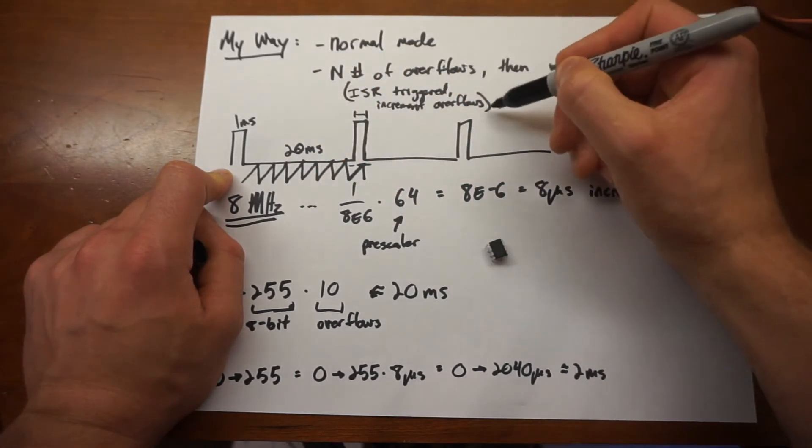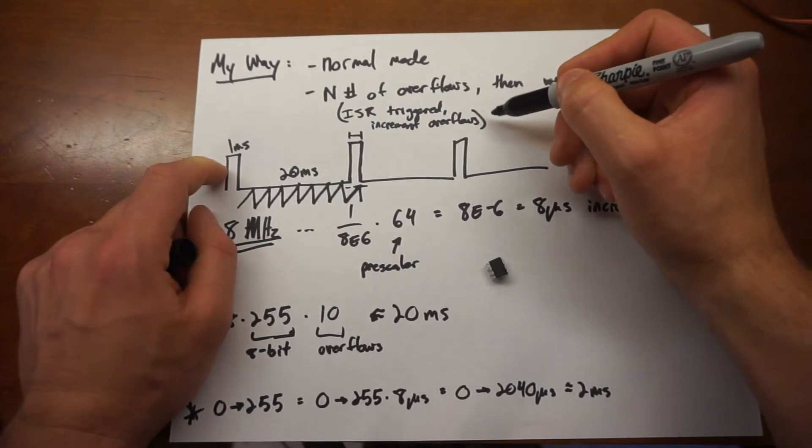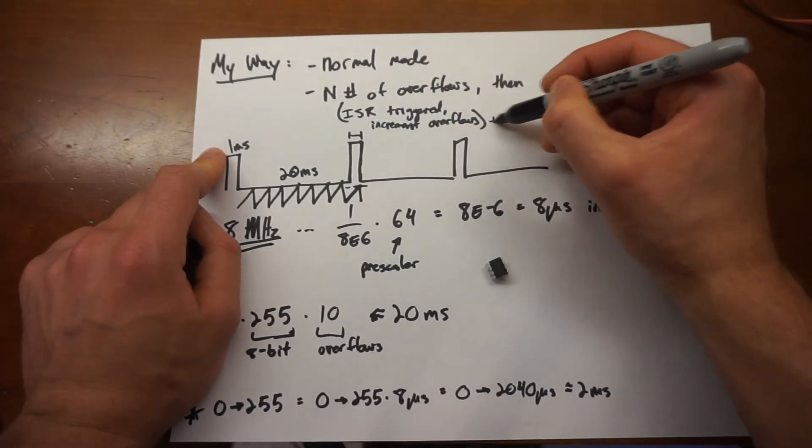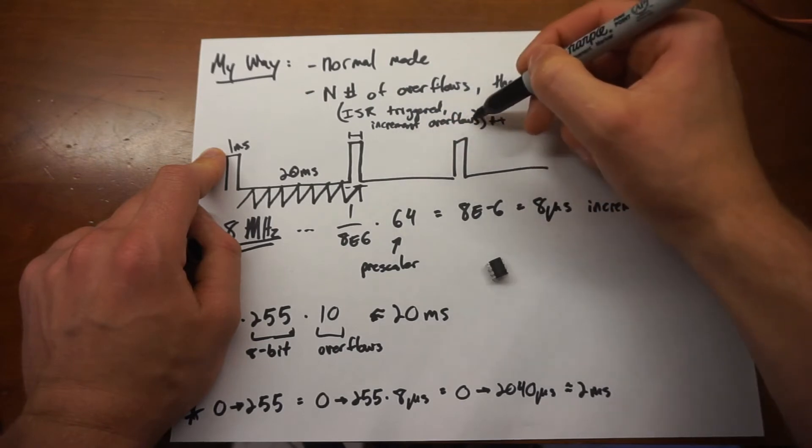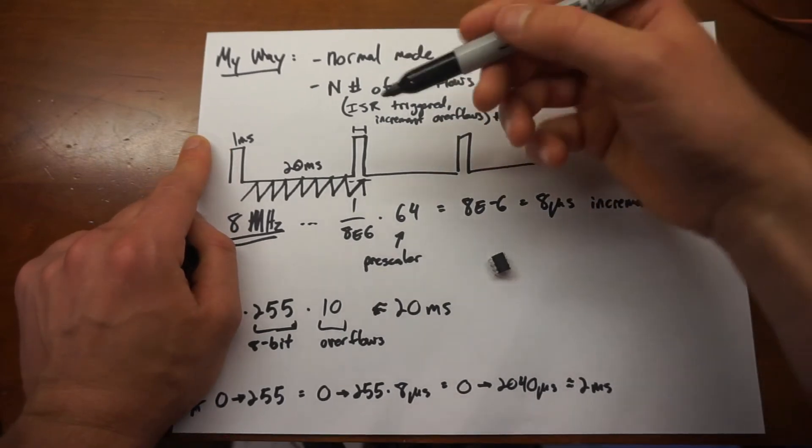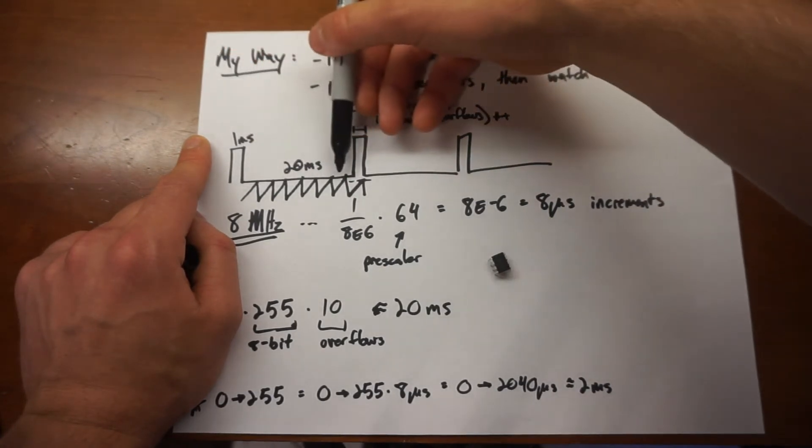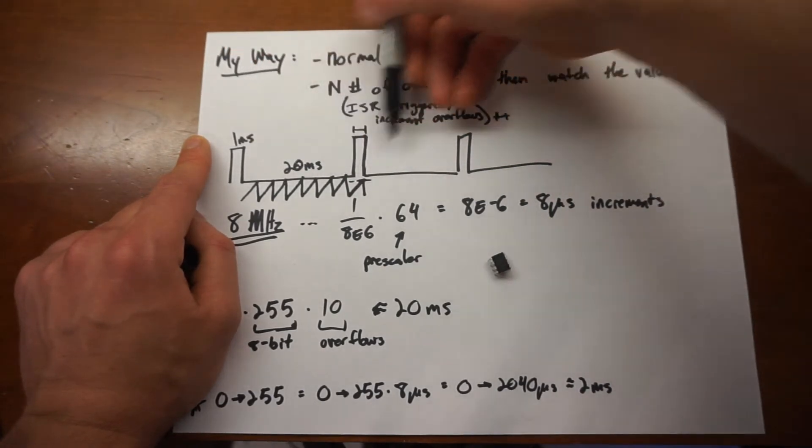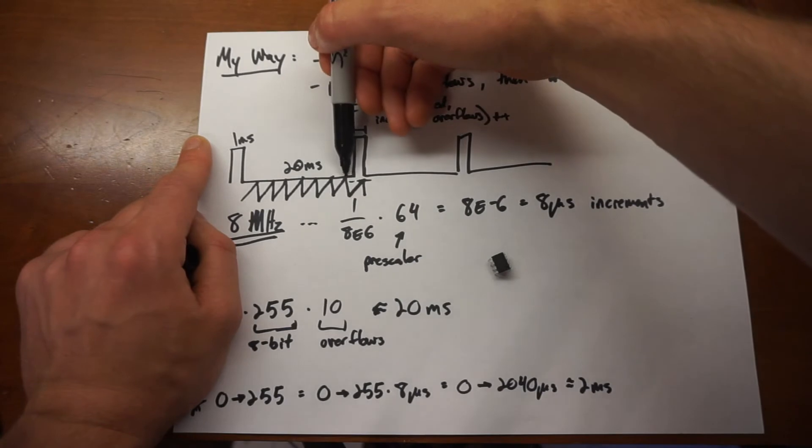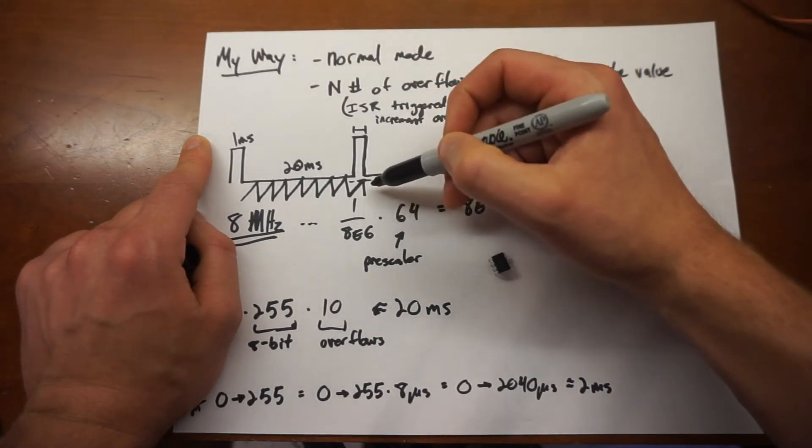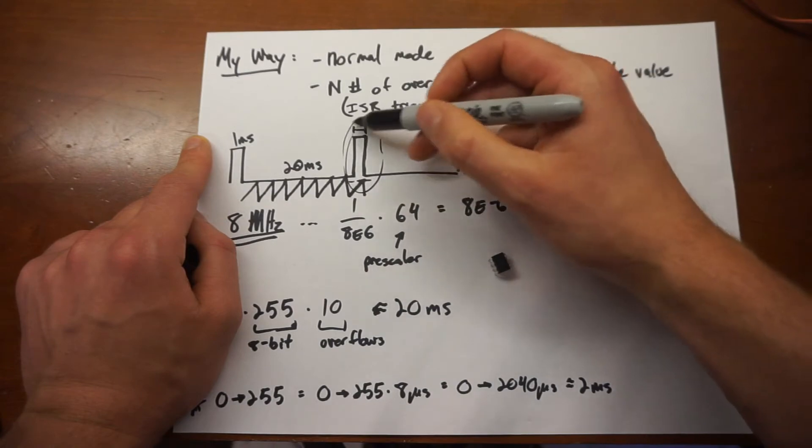So when it overflows, an interrupt is triggered, and we just want to do something very not time intensive in that function that's called. In this case, we're just incrementing, plus-plus to a counter, and then we're just going to monitor that counter in the code to say, okay, we've reached 10, the overflow has reached 10, and so do the last little step of the code, which is to make this little pulse happen.